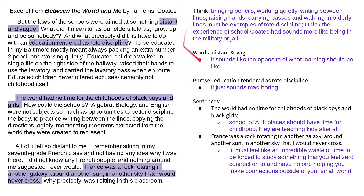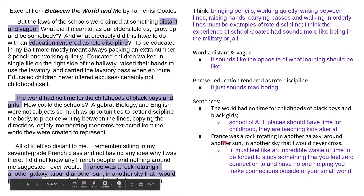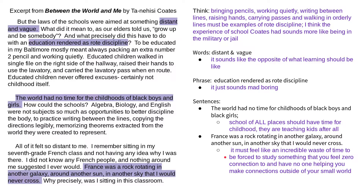Some of my 'think' answers: bringing pencils, working quietly, writing between the lines, raising hands, carrying your hall pass — these are all his examples of rote discipline. I think the experience of school he describes sounds more like the military or a jail than actual school. The words 'distant' and 'vague' are opposites of what learning should feel like — we want to feel close and have specific answers, not vague ones. The sentence 'The world had no time' stands out because schools of all places should have time for children. And the France example — it must feel like an incredible waste of time to be forced to study something he felt had no connection to him and no way of helping him.